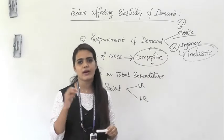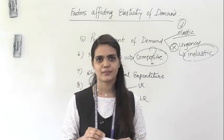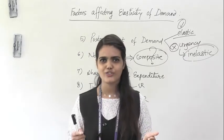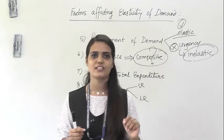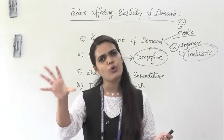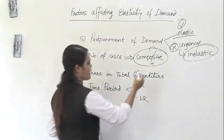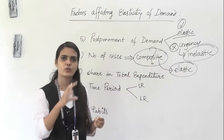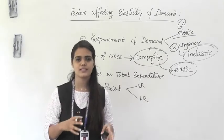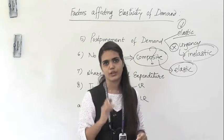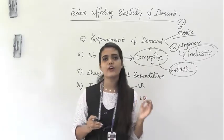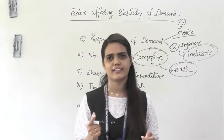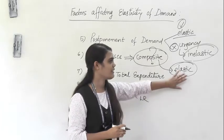It is obvious what happens when the per unit electricity charge increases — your mom will tell you not to waste electricity unnecessarily: switch off the lights, switch off the fan when you leave the room. She is trying to change consumption for unnecessary uses so you use it for more important purposes. If the nature of demand is composite, your degree of responsiveness is highly elastic. If prices are rising, you will cut down on luxury or entertainment purposes and use the resource for more important ones.